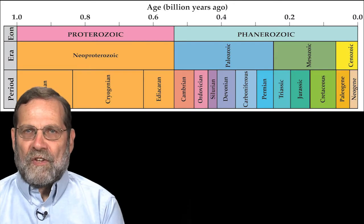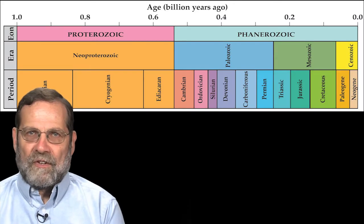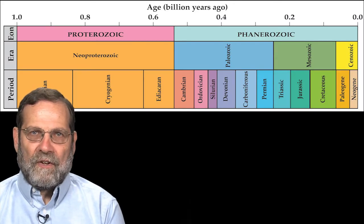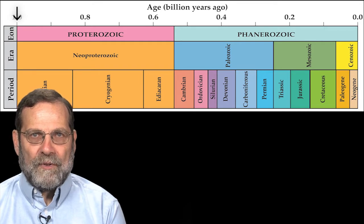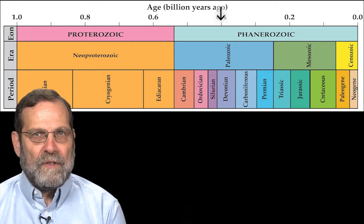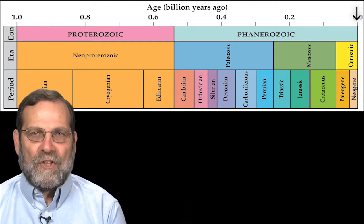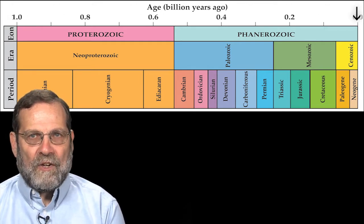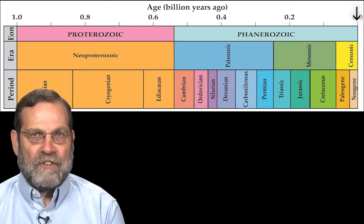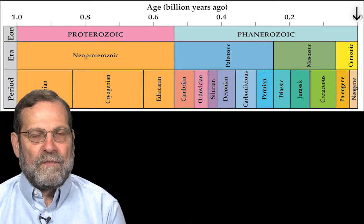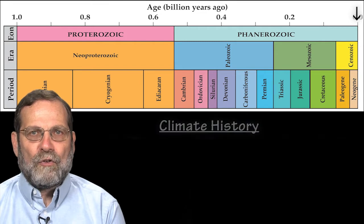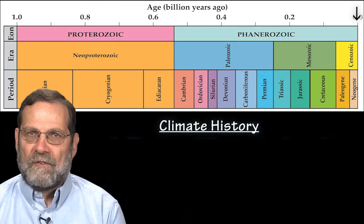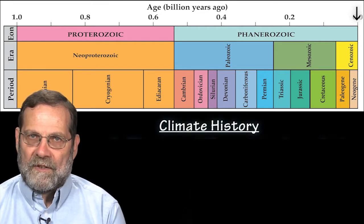This video segment continues our historical account of Earth's climate. It covers the period from one billion years ago to one million years ago. A key question is whether the changes in climate that we are observing today derive from human activities. To address this question, we must examine the history of Earth's climate.